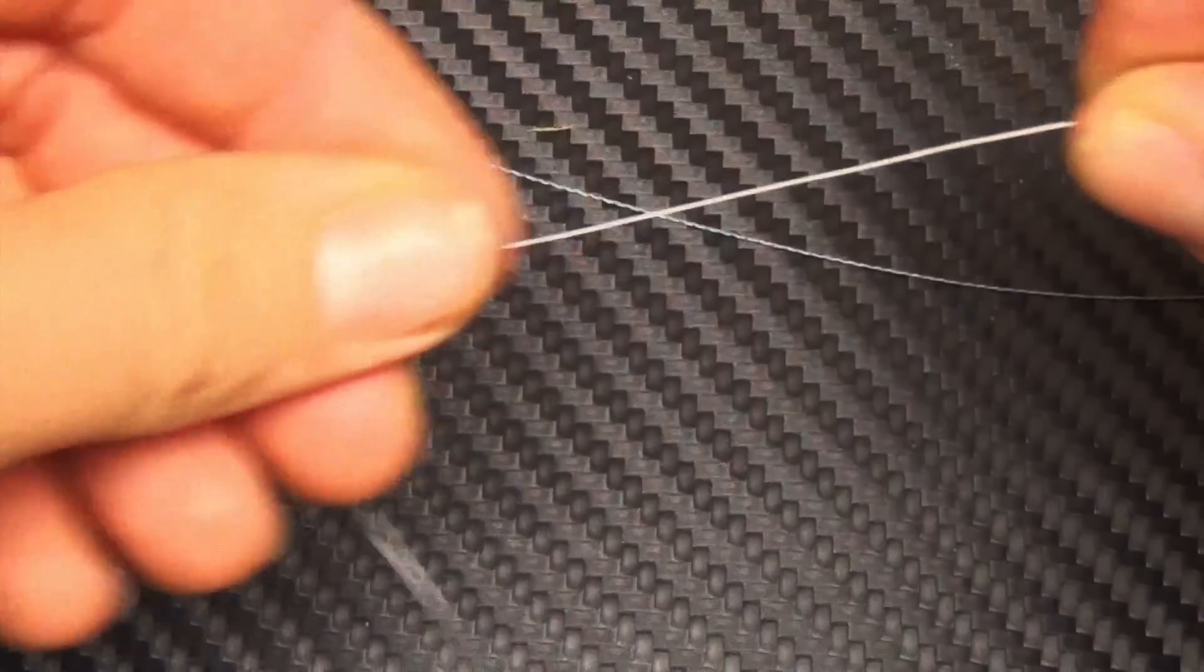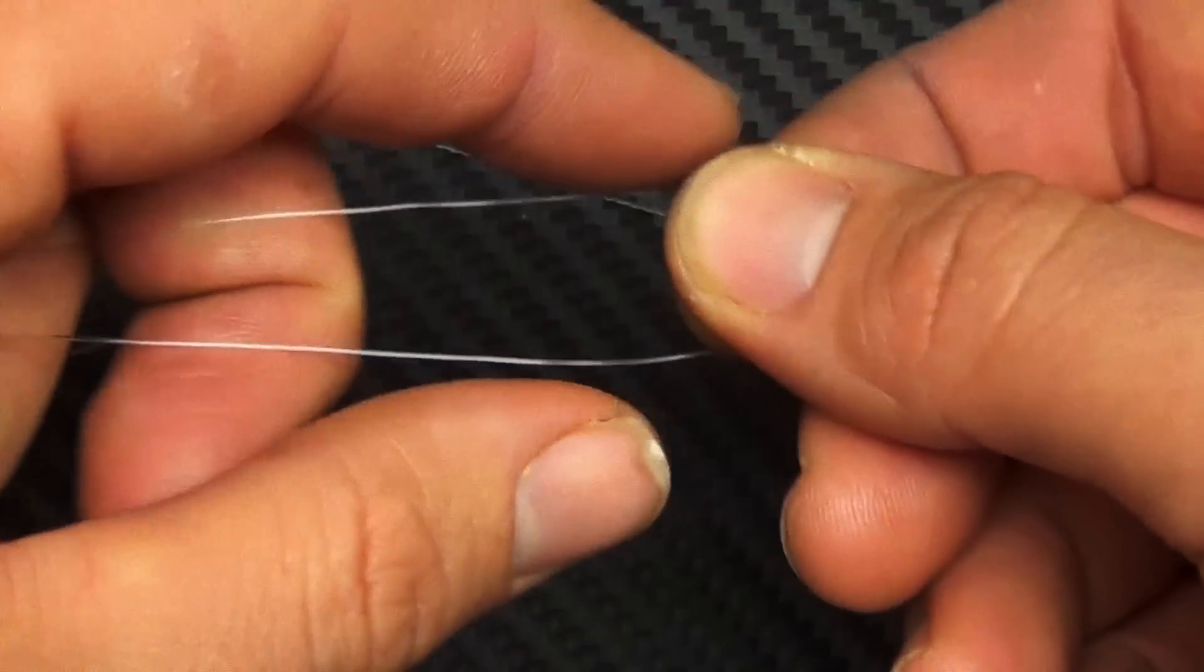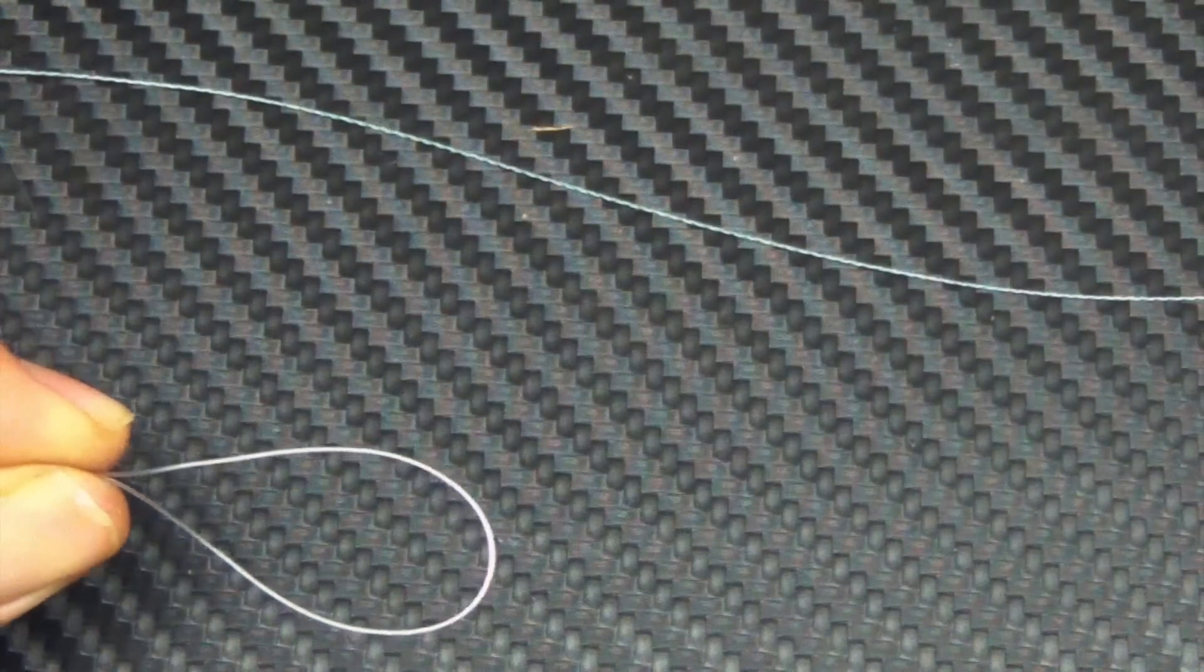This knot's called the Alberto Knot. It's a super strong knot, very small and compact. First thing you do is take your fluorocarbon leader and you're going to fold it over to make a loop like this.